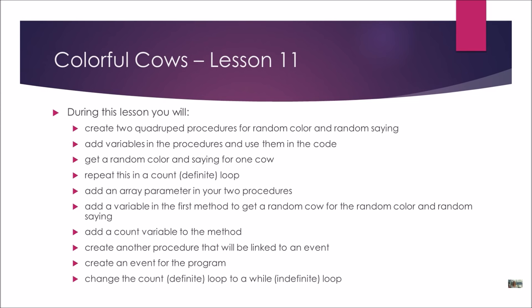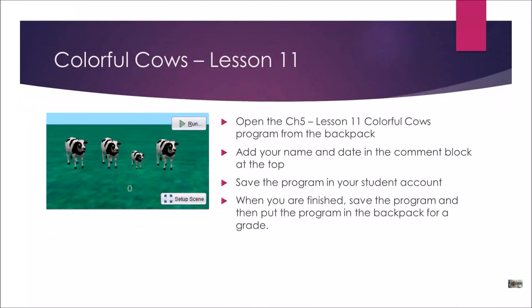You're going to create a procedure to hold all this code and link it to an event, then do a mouse click event to get the ball rolling. Finally, we'll change the count loop to a while loop — so everything you've learned in this chapter comes together in one program. To get started, open the Chapter 5 Lesson 11 Colorful Cows program from the backpack. Add your name and date in the comment block at the top, save the program in your student account, and when you've gone through all three sections, save and put it in the backpack for a grade.